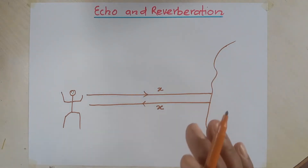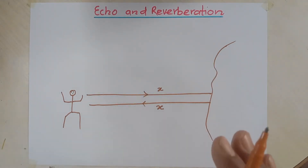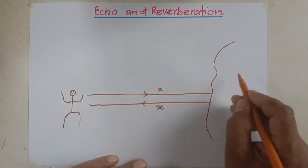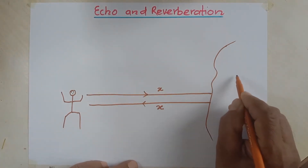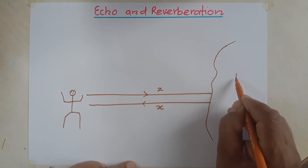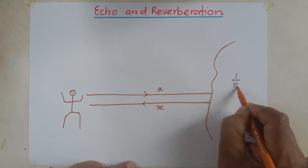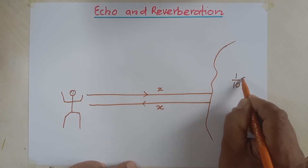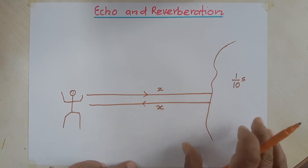Now there is one important fact about the persistence of hearing: if a sound enters into our ear, its effect remains for 1/10 of a second, and then its effect goes away.